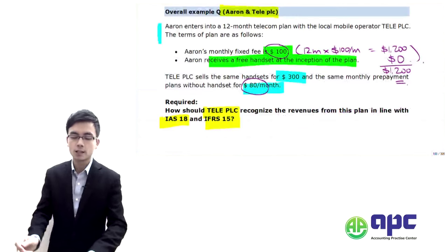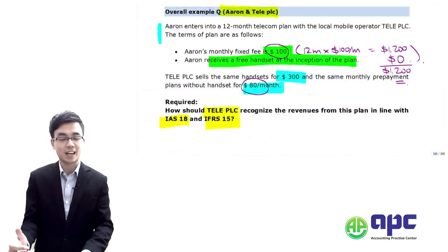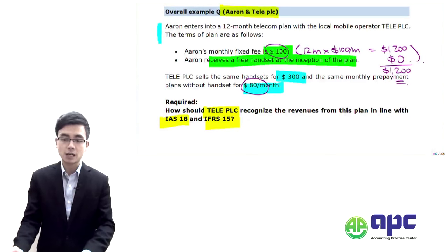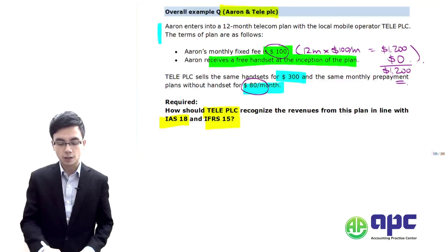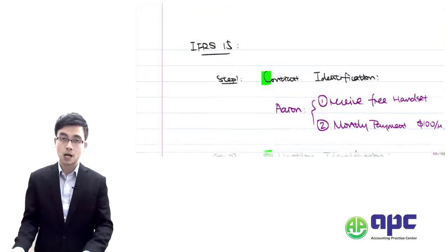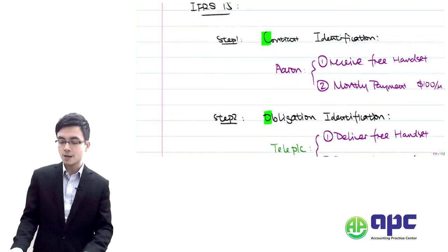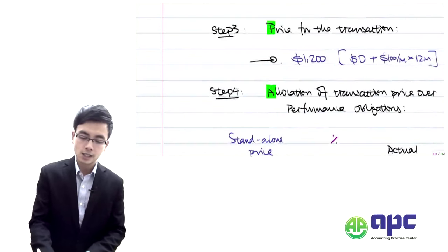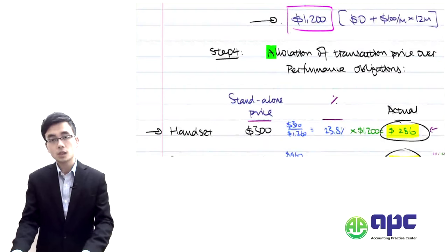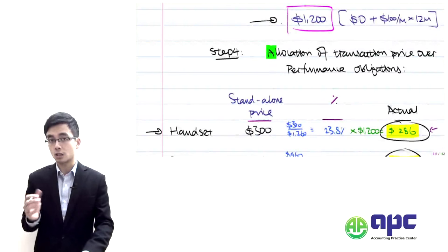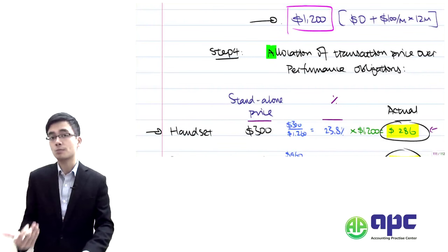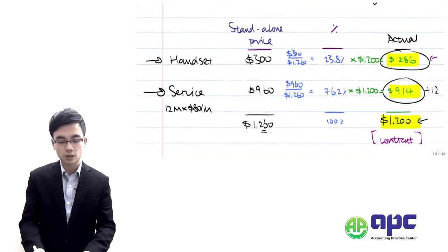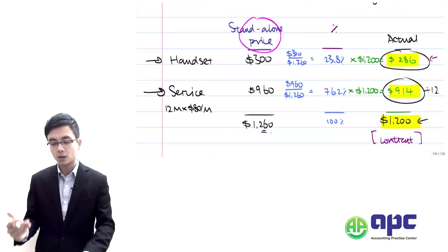Recap: today we looked at the Errant and Tele-POC example in the telecommunication industry, applying the five-step model to recognise sales revenue. Using the COPA mnemonic, we identified the contract, identified the obligations, determined the transaction price of $1,200, and spread that $1,200 into the performance obligations — handset and service — based on the proportion of standalone selling prices.